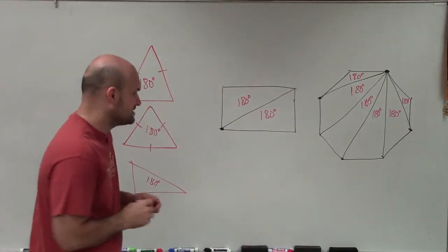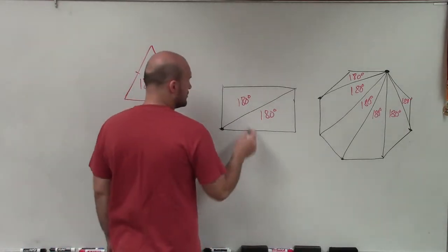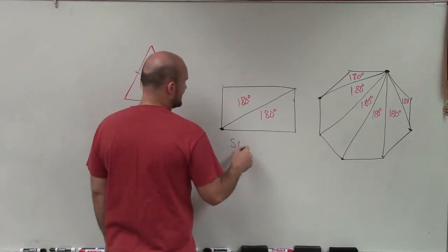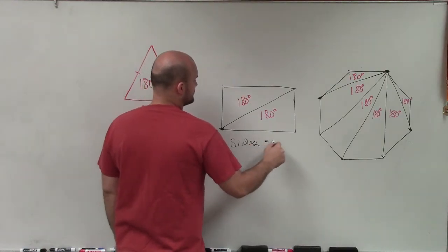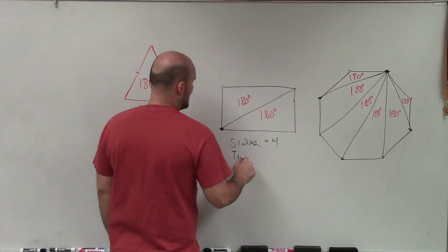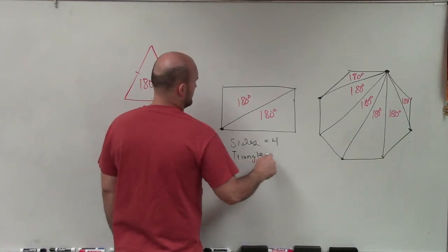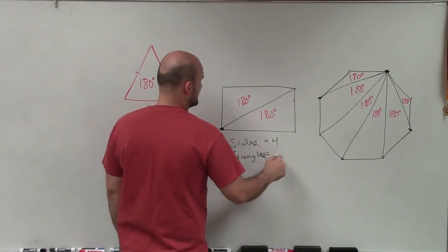Now, there's an important thing to kind of notice and to understand. So when we look at this, the number of sides is equal to 4. The number of triangles is equal to 2.